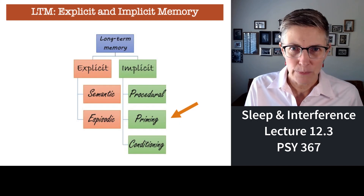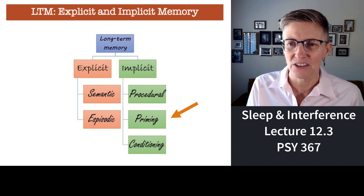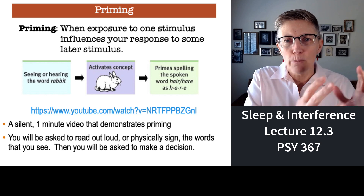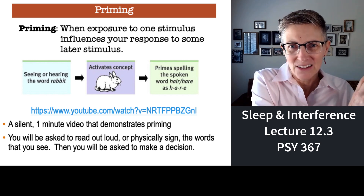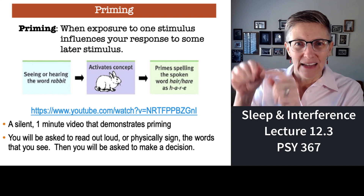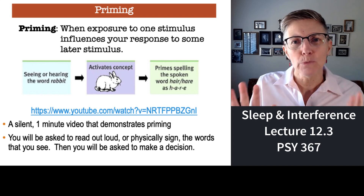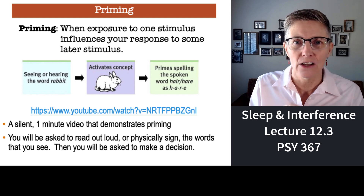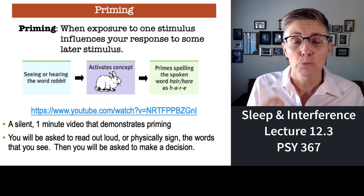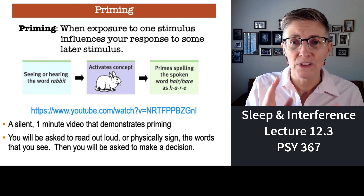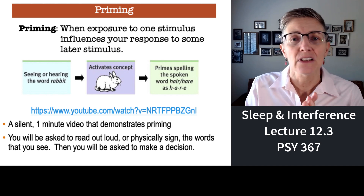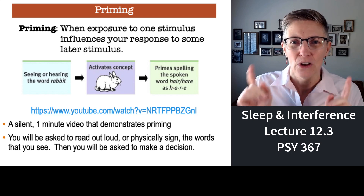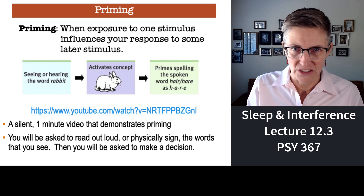The last type of implicit memory I'm going to cover in this section is priming. Priming is when your exposure to something in the past changes your reaction to something in the present. I'm going to show you a silent one-minute video that demonstrates priming. You really want to do what this video asks you to do, because then you'll understand priming and remember it without trouble.